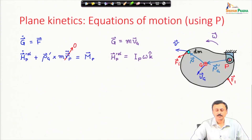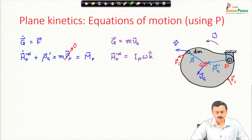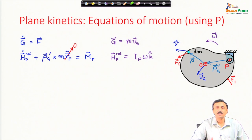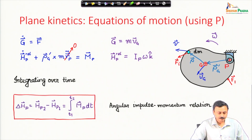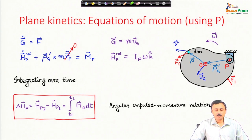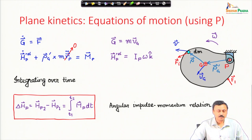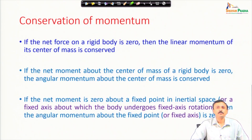We had also looked at the impulse momentum relation for a body which is hinged at a point. For planar motion, if the acceleration of that point P is 0, that simplifies the angular momentum expression h_P_rel to I_P times the angular velocity in the k-cap direction, where I_P is the moment of inertia about point P. Integrating the angular momentum relation about P gives the change in angular momentum about P equals the angular impulse about P. If angular impulse about P is 0, angular momentum about P is conserved.